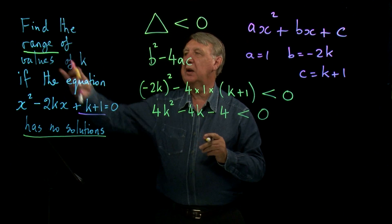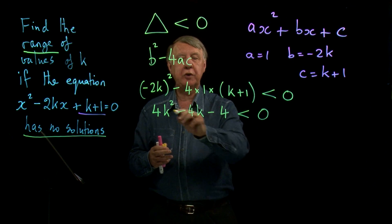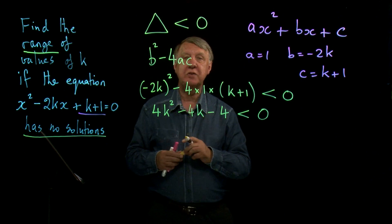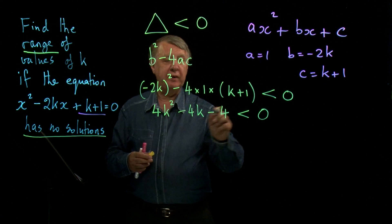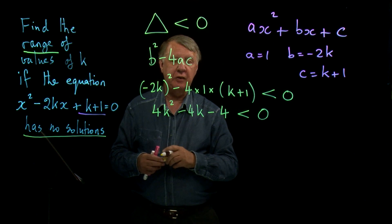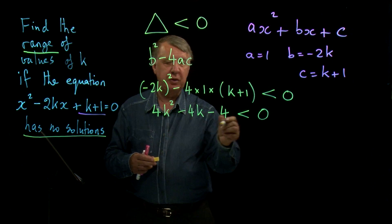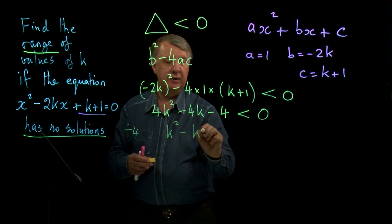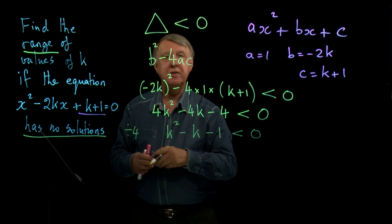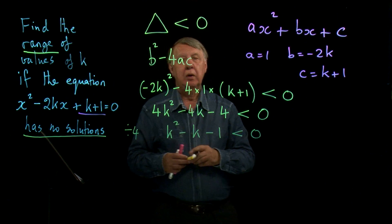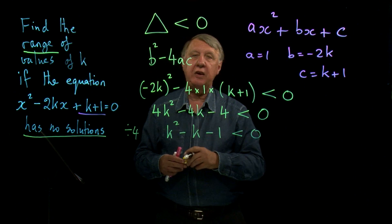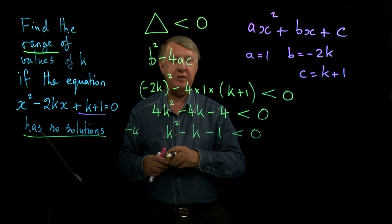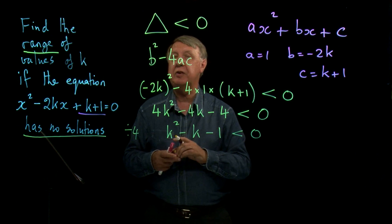So remember our clue inequalities. What have we ended up with? Well we've ended up with a quadratic inequality. Now if you were solving that certainly you would look at that and say oh crikey I can divide by 4 there. So let's divide by 4. So k squared minus k minus 1 is negative. Now if you think back to the work we've done on quadratic inequalities you attempt to factorise. Well after a little bit of thinking you can see that doesn't factorise.